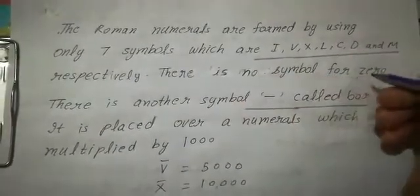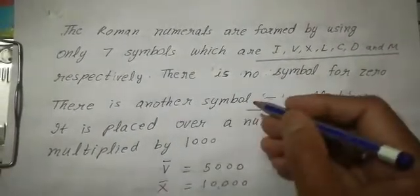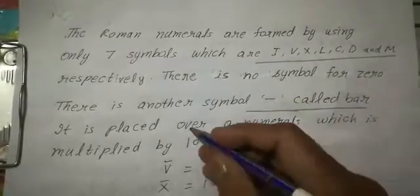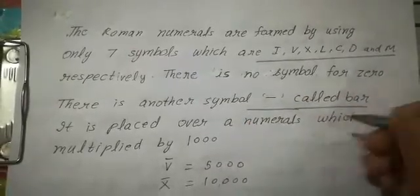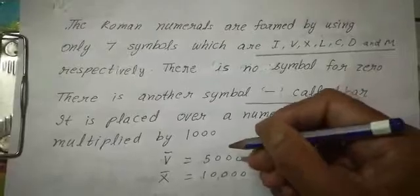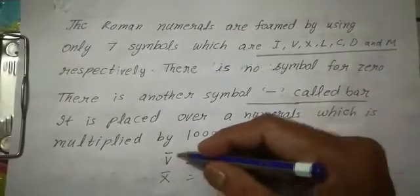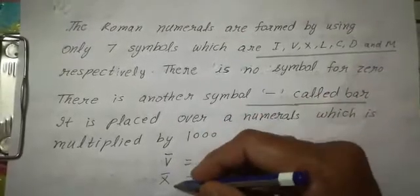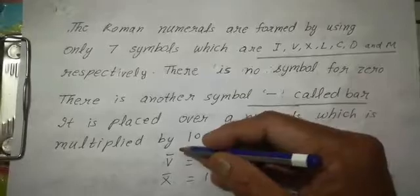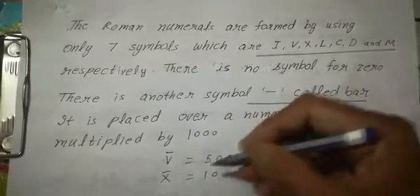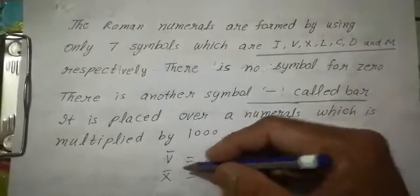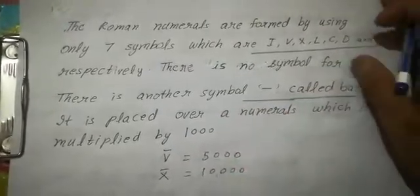There is no symbol for 0. There is another symbol called bar, which is placed over a numeral and multiplies it by 1000. For example, V-bar means 5 into 1000, which equals 5000. X-bar: the value of X is 10, so 10 into 1000 equals 10,000.